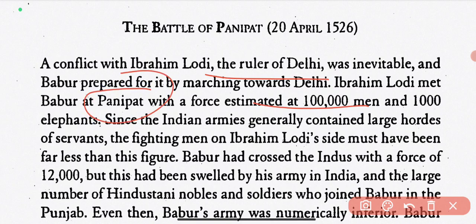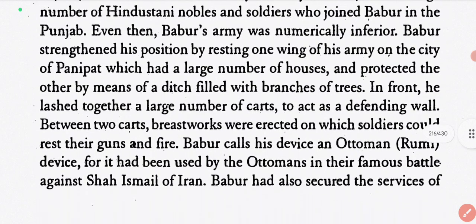Ibrahim Lodi had a large army and a thousand elephants. Since the Indian armies generally contained large hordes of servants, the actual fighting men on Ibrahim Lodi's side must have been far less than the total figure. Babur had crossed the Indus with a force of 12,000. The Indian armies carried many things with them when going into battle. Even after Hindustani nobles and soldiers joined Babur in Punjab, Babur's army was numerically inferior.